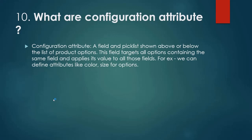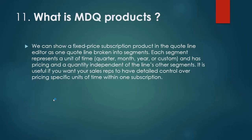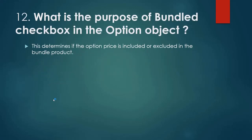What is MDQ (Multi-Dimensional Quoting)? We can show a fixed price subscription product in the quote line editor as one quote line broken into segments. Each segment represents a unit of time like quarter, month, year, or custom, and has pricing and quantity independent of the other segments. It is useful if you want your sales reps to have detailed control over pricing specific units of time within one subscription. What is the purpose of the bundle checkbox in the option object? It determines if the option price is included or excluded in the bundle product.